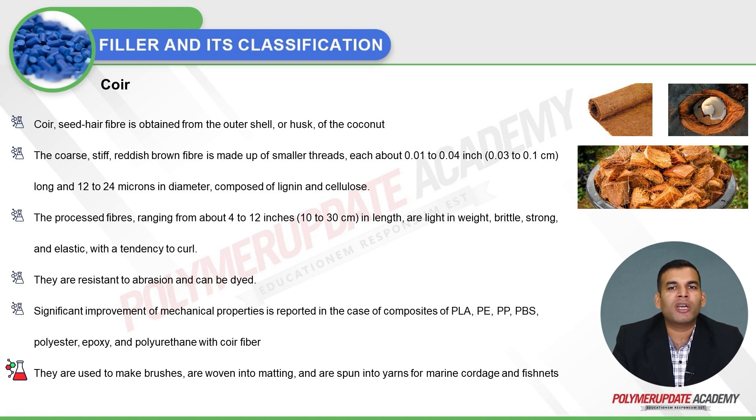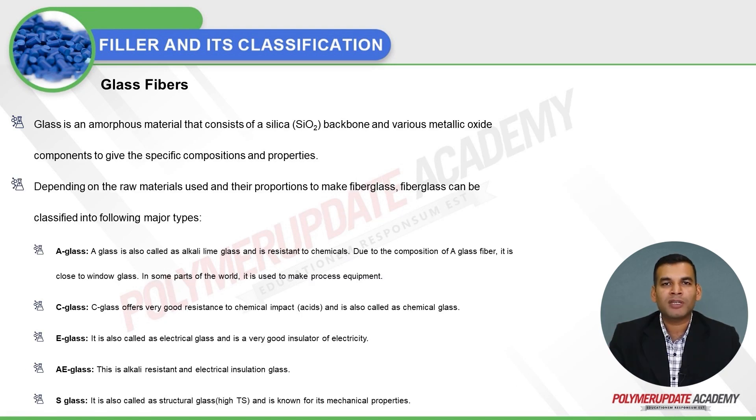Coir fibers are used to make brushes, woven into matting, and spun into yarns for marine, cottage, and fishing net applications.